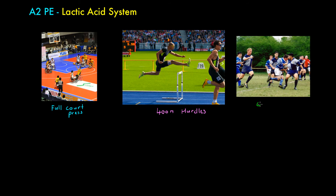Here we've got what we might refer to as open play in rugby. Rugby is a very stop-start game, certainly rugby union anyway. But when the ball doesn't go out, when there aren't penalties conceded, when there's an advantage being played and the ball is recycled over and over again, athletes — the rugby players — begin to accumulate lactic acid and the game begins to slow down. There are fewer big hits and people get to the breakdown less. So open play in rugby is a good example of the lactic acid system in operation.